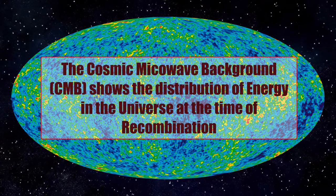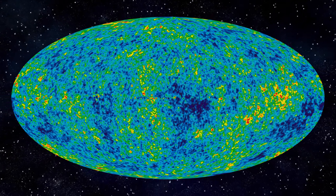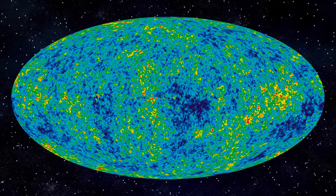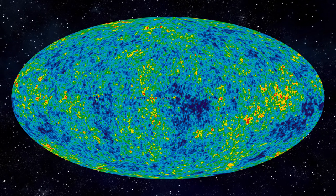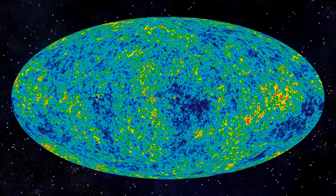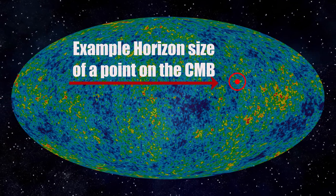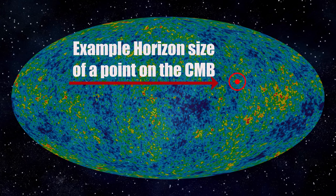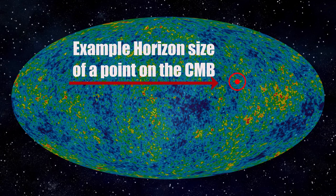Cosmologists are able to work out when the CMB last scattering surface should have been formed, and can combine this with the physical horizon size growth rate in the radiation dominated era to work out the maximum horizon size at the time of the CMB. Without going into the maths, the result is that areas on the CMB which are separated by an angular size of more than around two degrees are outside of each other's horizon. I'll draw an example two-degree horizon around a point on the photo for clarity. Under the assumptions of the Big Bang, every point outside of this circle from its centre cannot possibly be in causal contact with the centre.